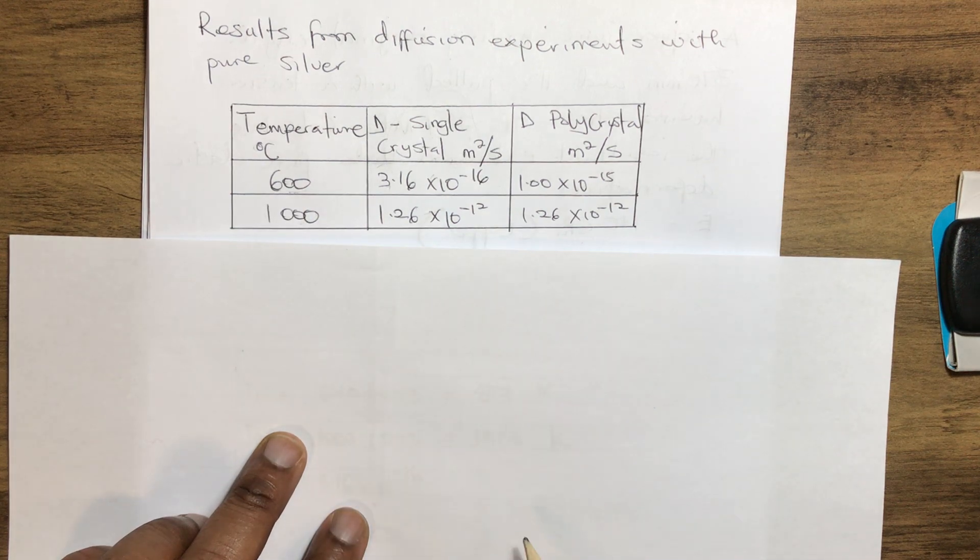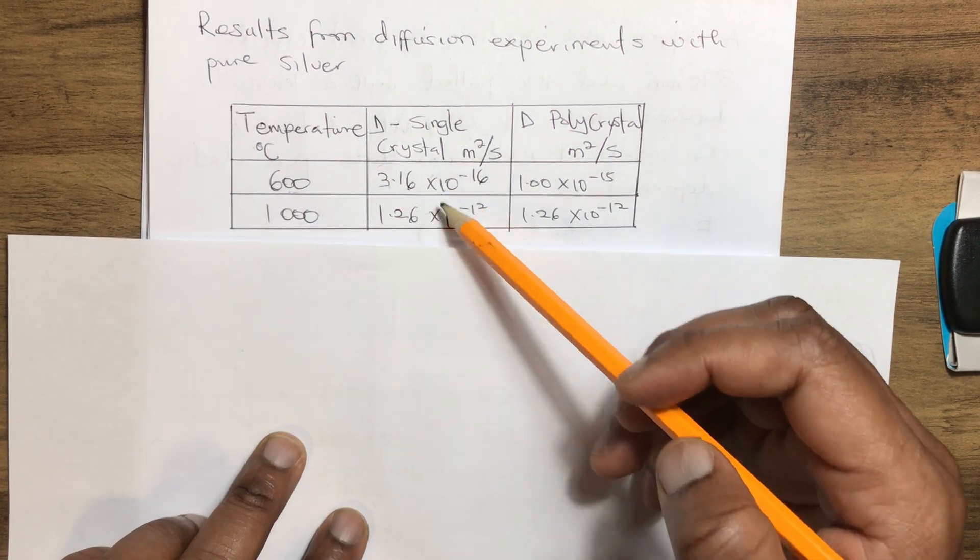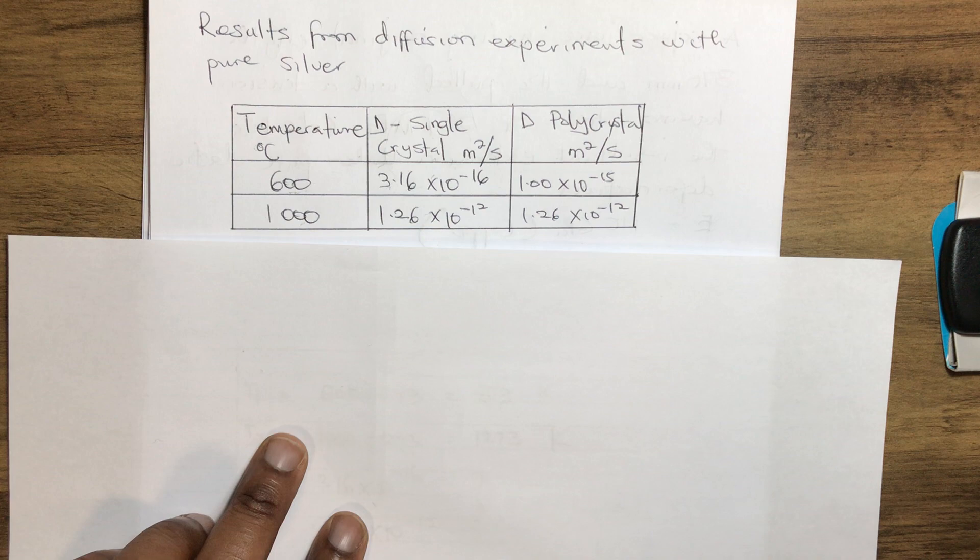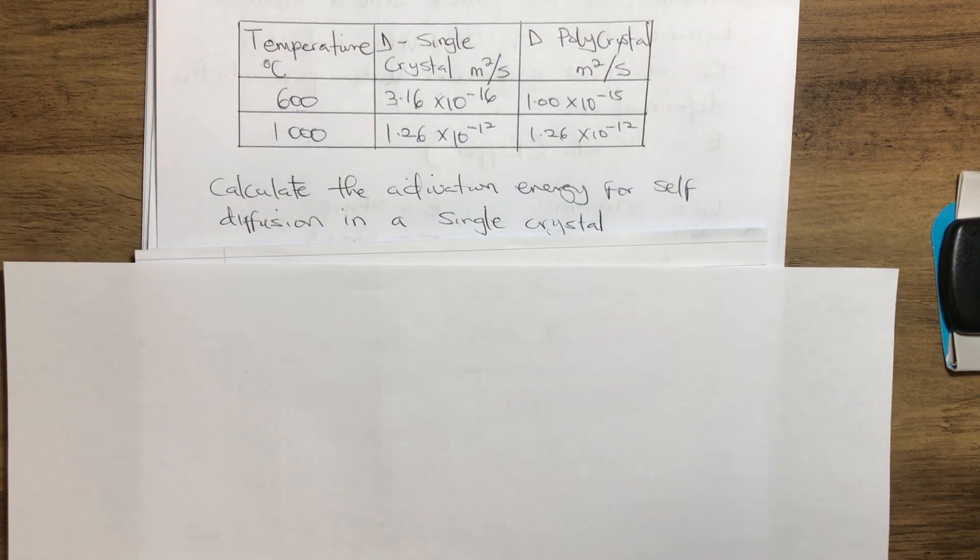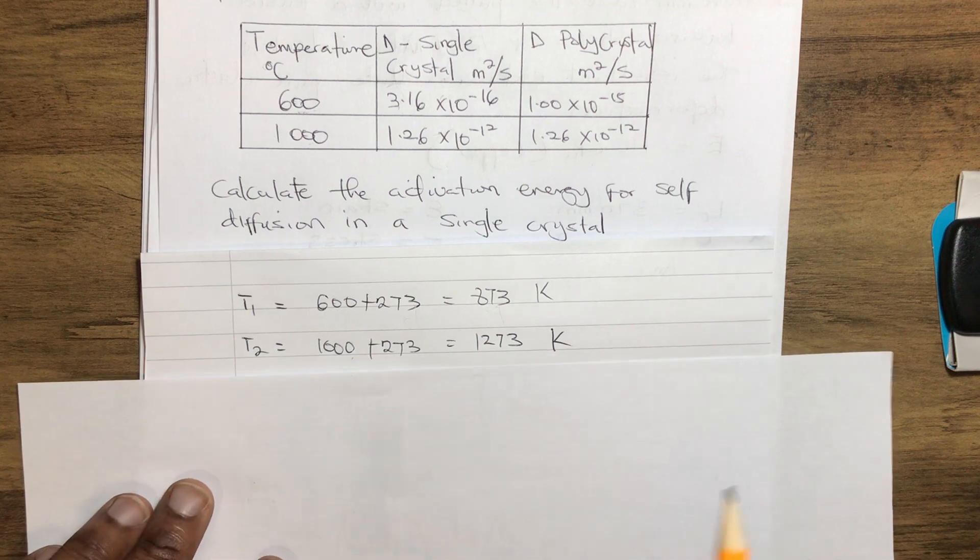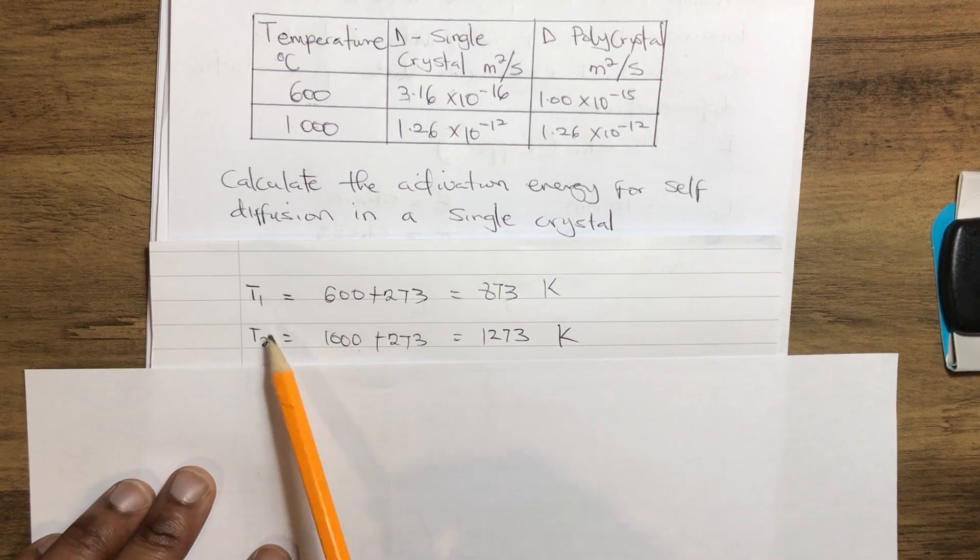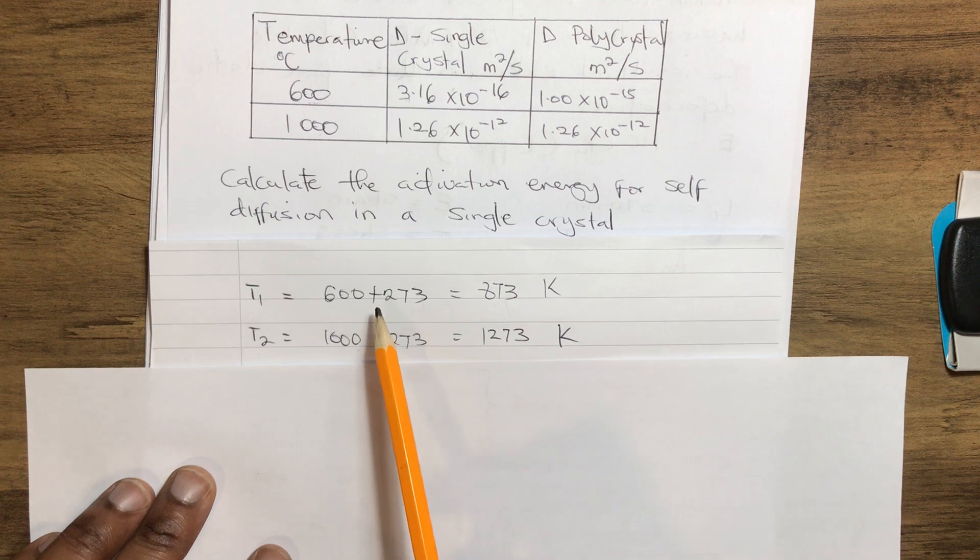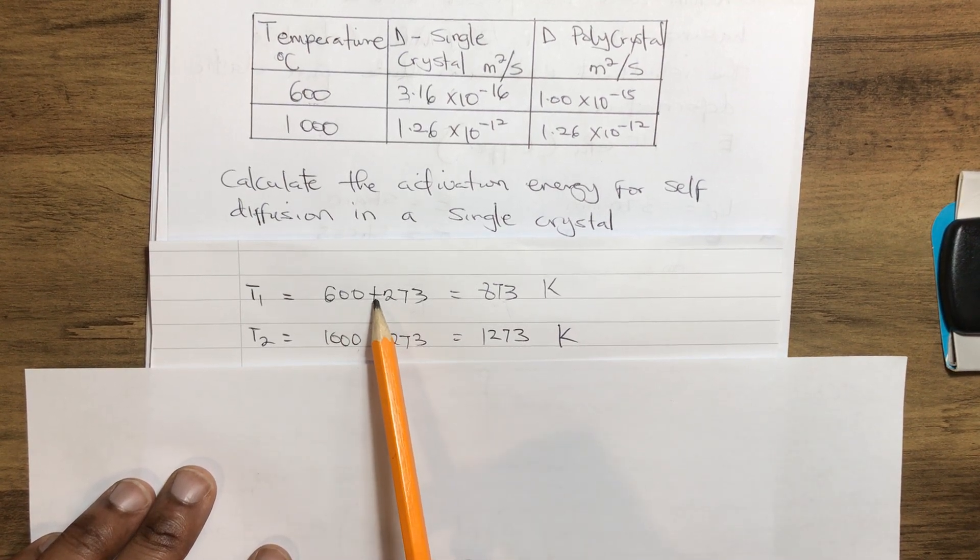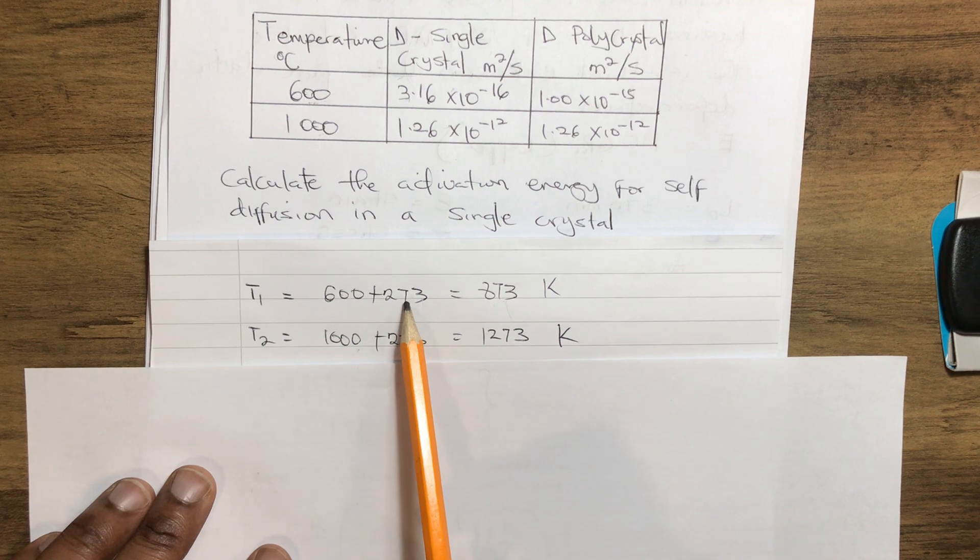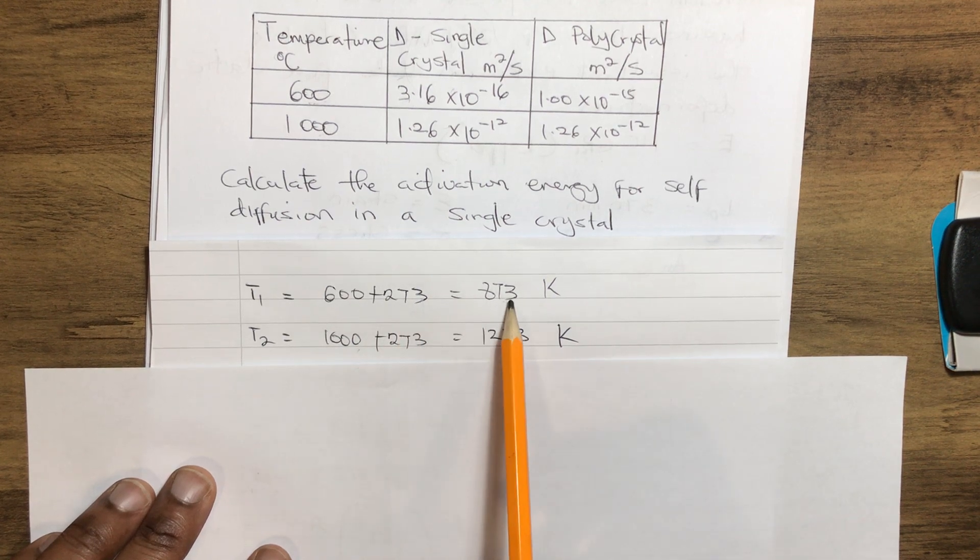The first temperature T₁: 600, which we need to convert to Kelvin. 600 Celsius plus 273, which gives us 873 Kelvin.